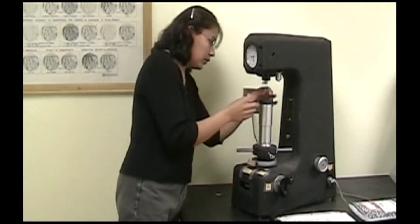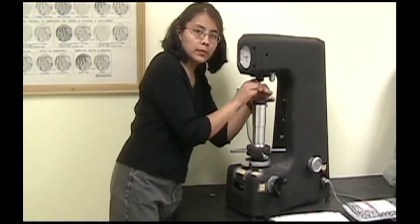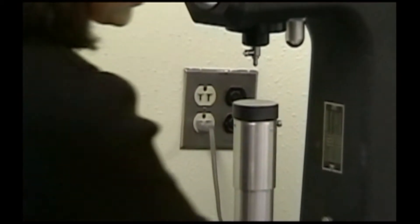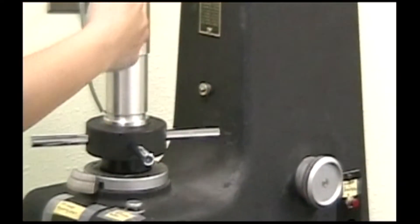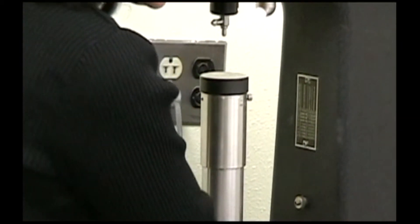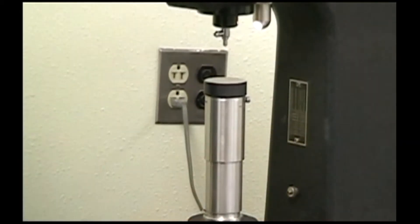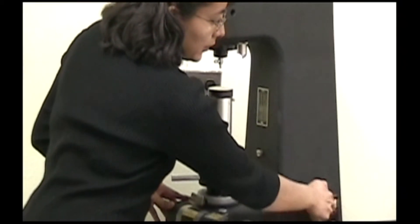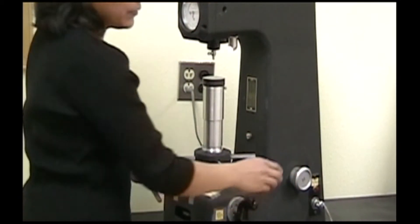You insert the indenter you'll be using and you can turn on the light here so that you can see better. You should also set the load for the indenter that you're using. You should set it on 100 for the Rockwell B scale and set it on 150 for Rockwell C.